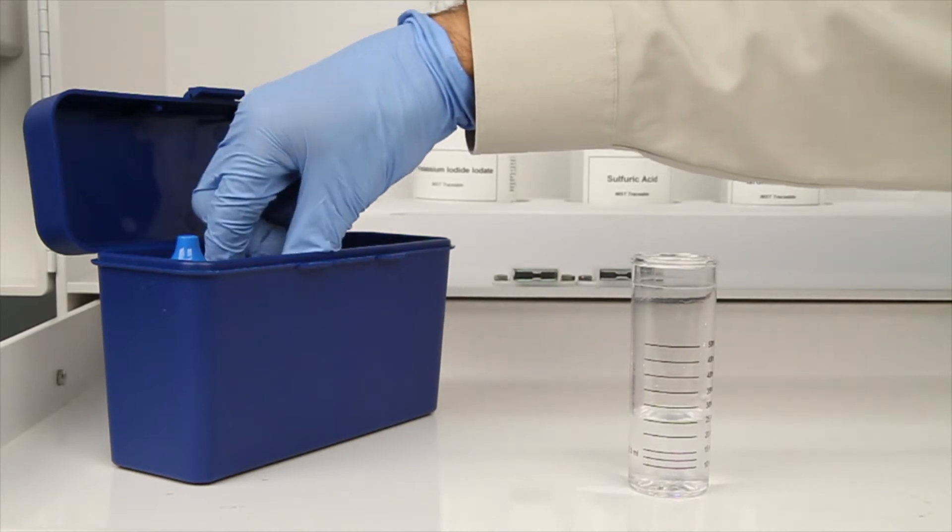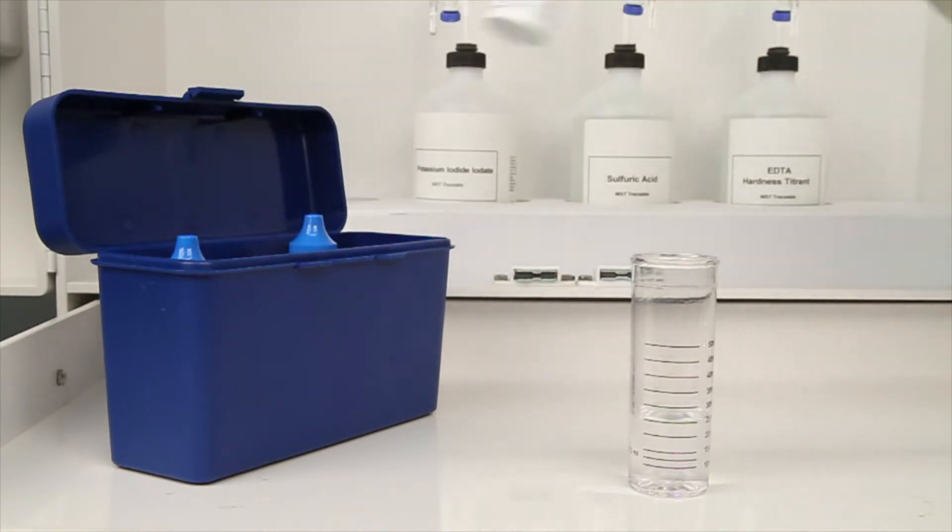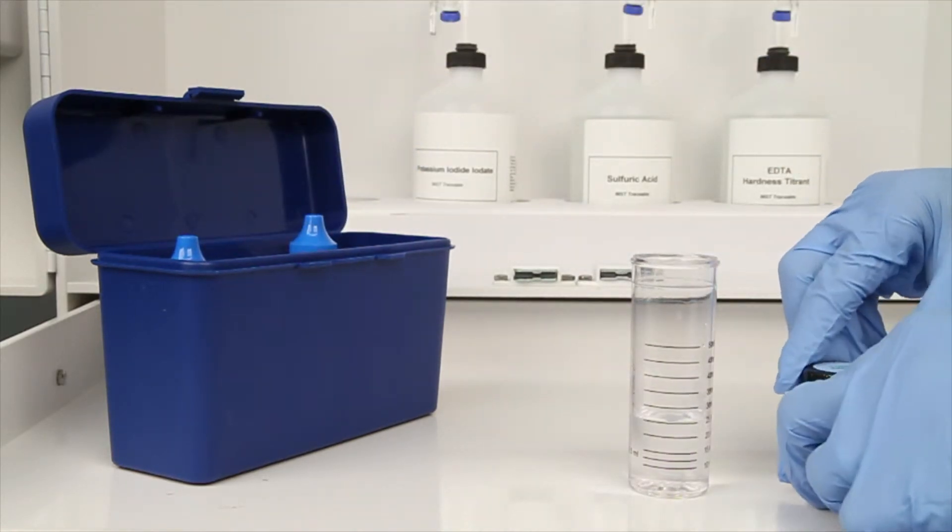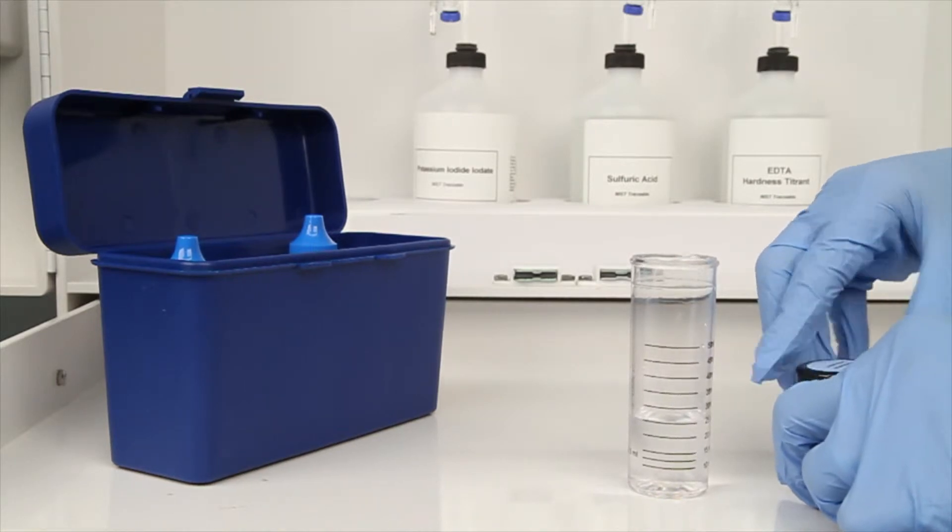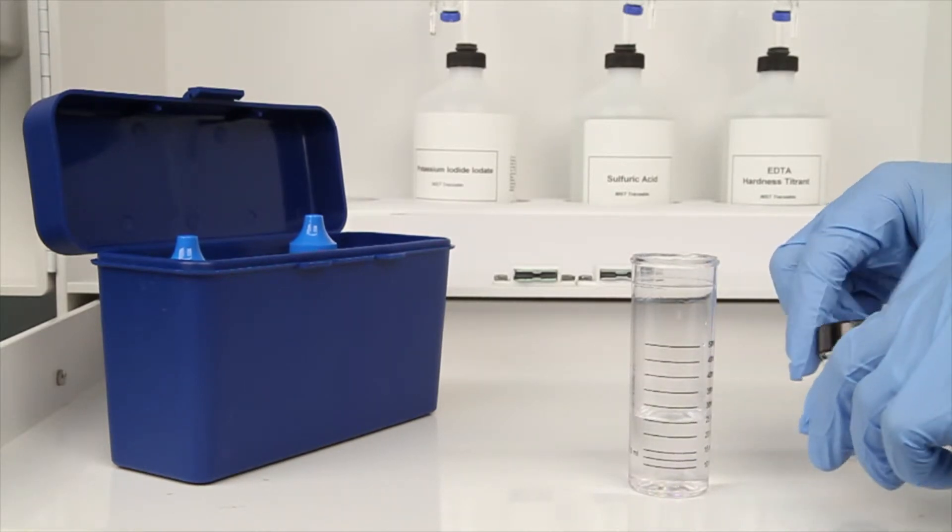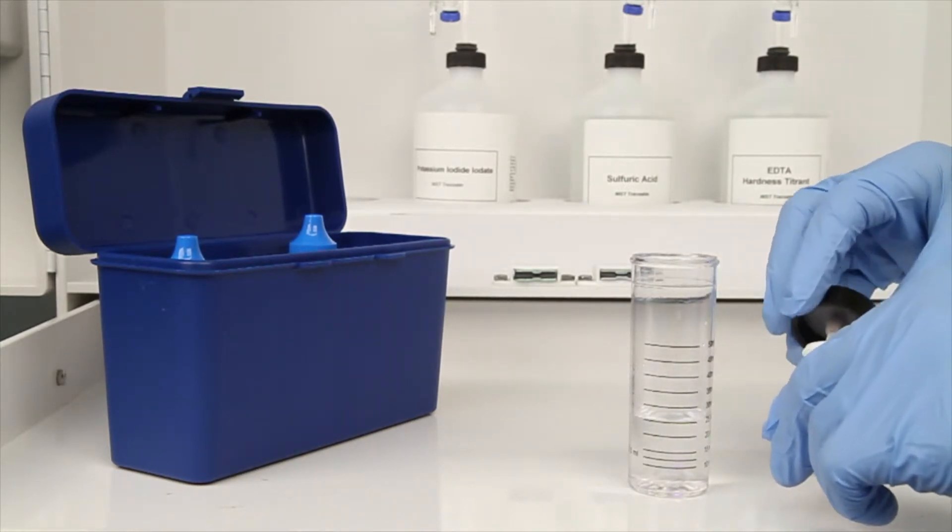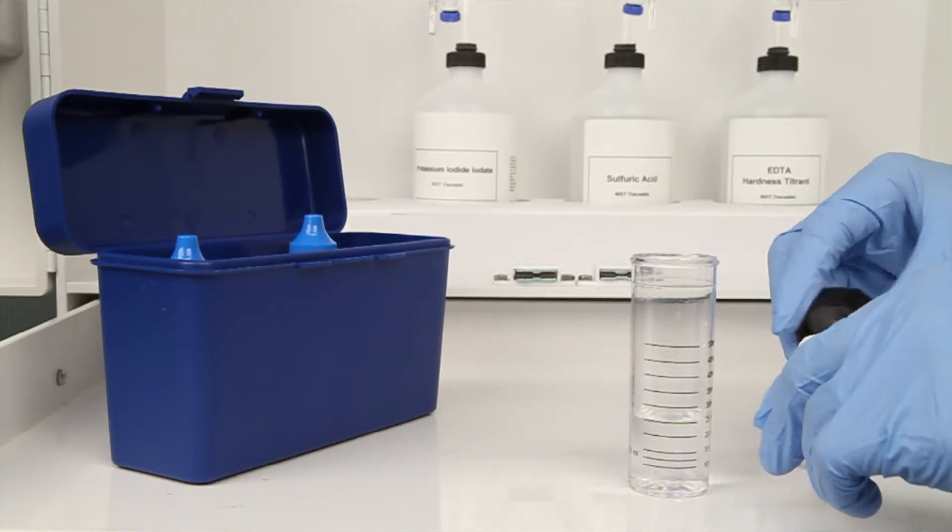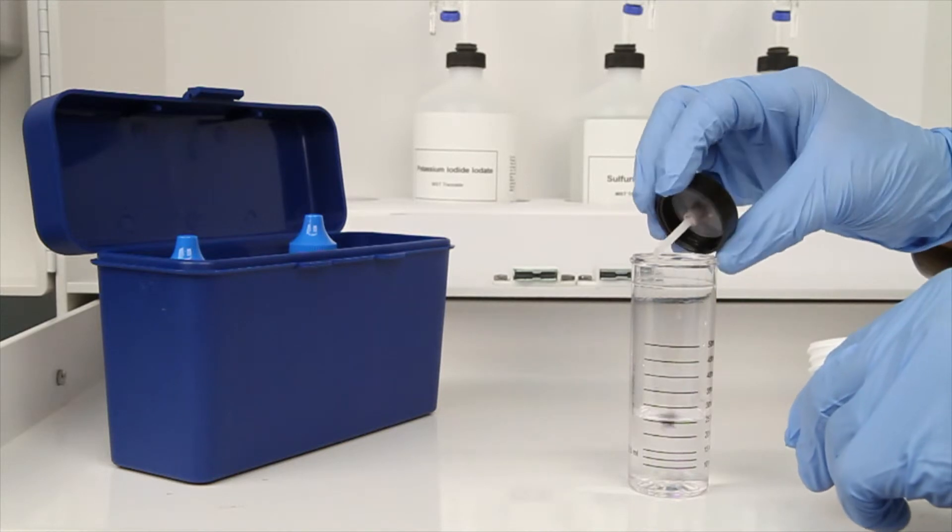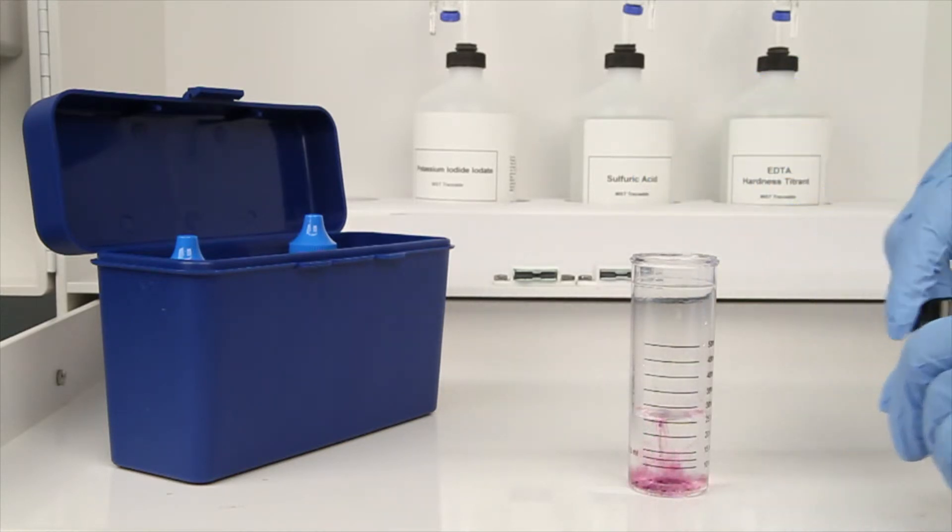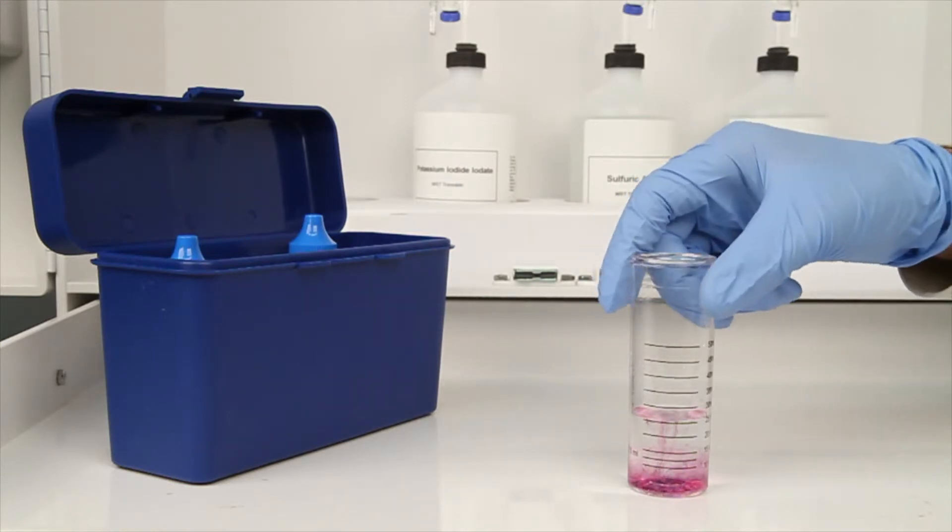The next step according to the Endpoint ID procedure is to add one scoop of calcium hardness indicator powder. After the addition of the powder, swirl the vial to make sure the powder is completely dissolved.